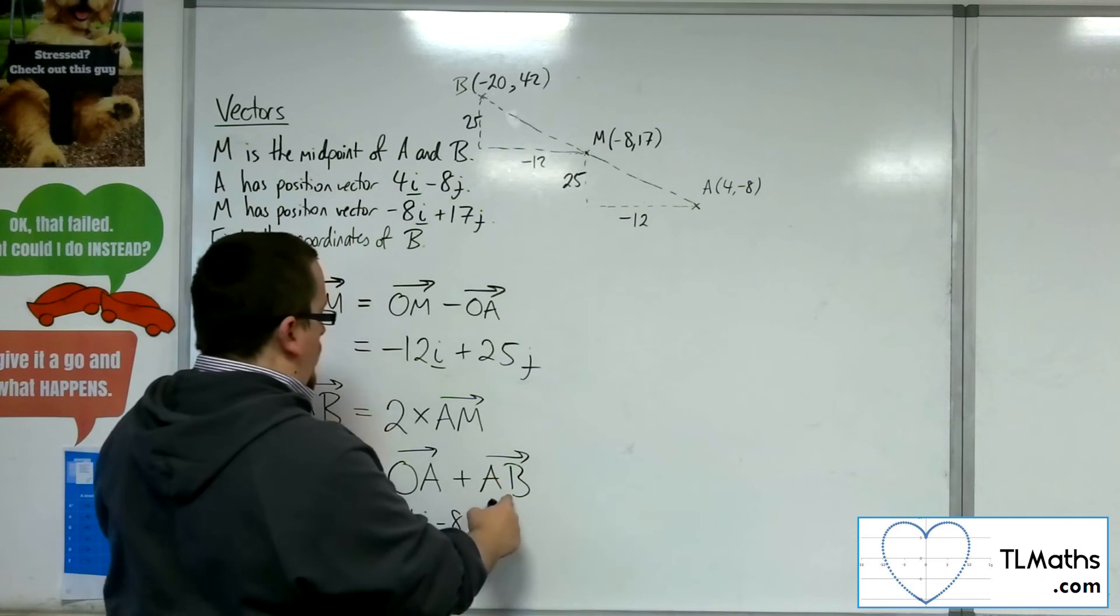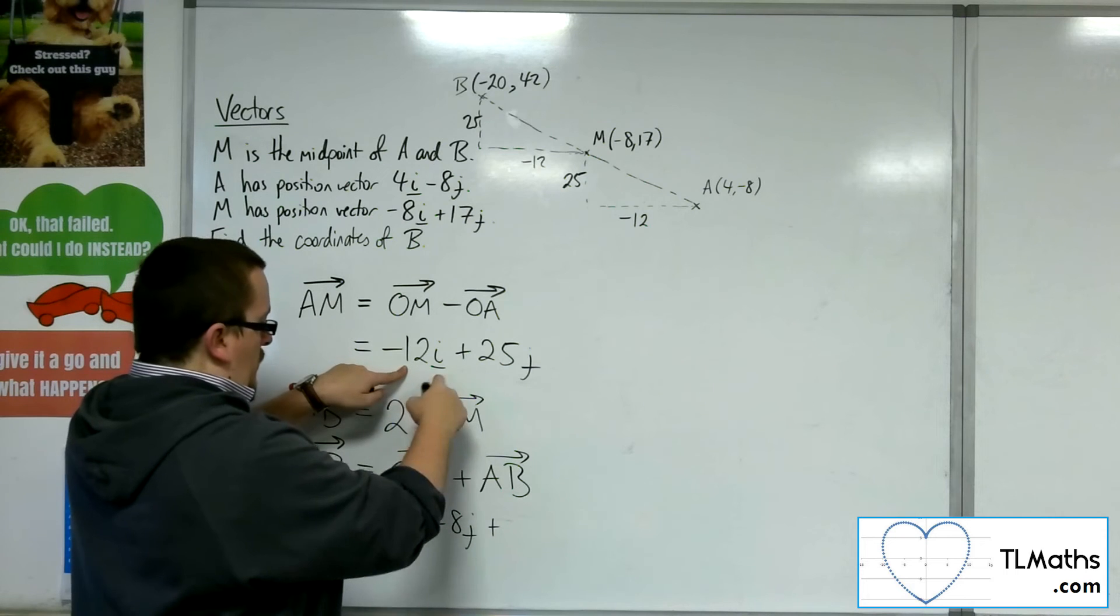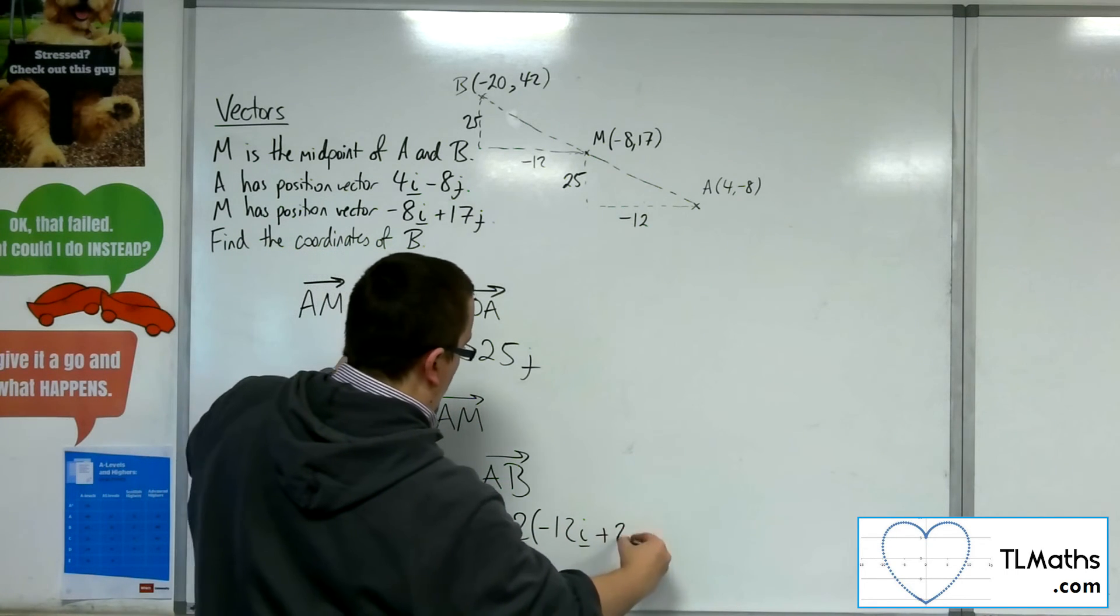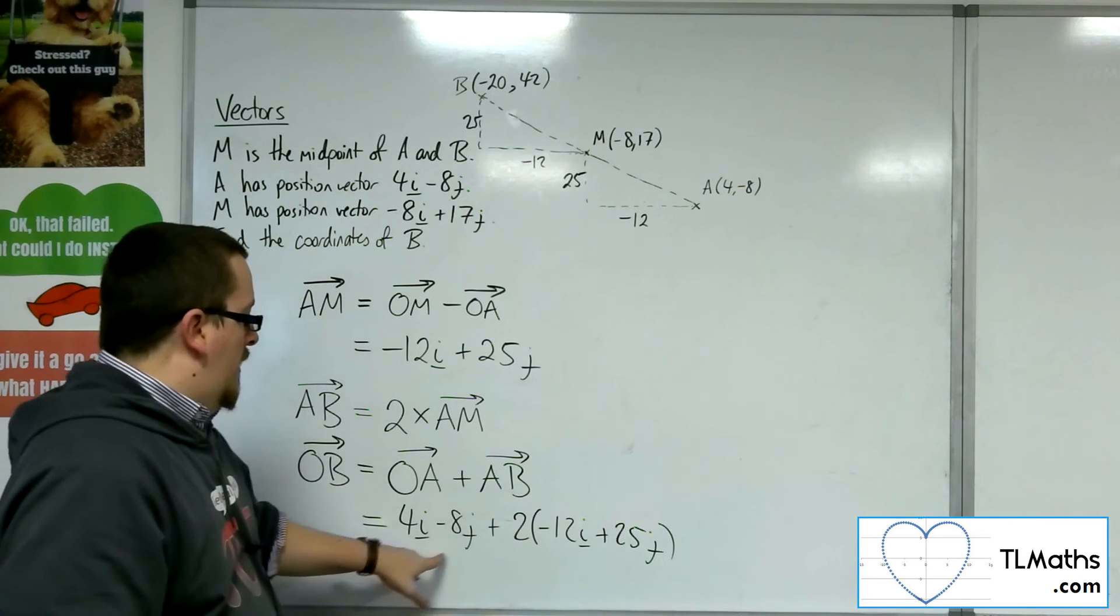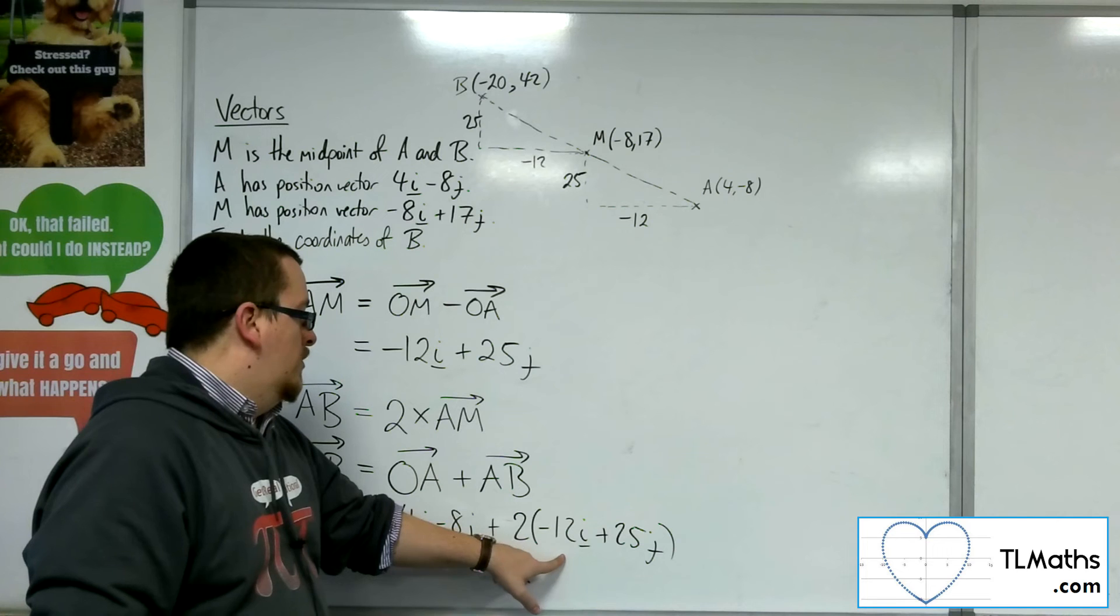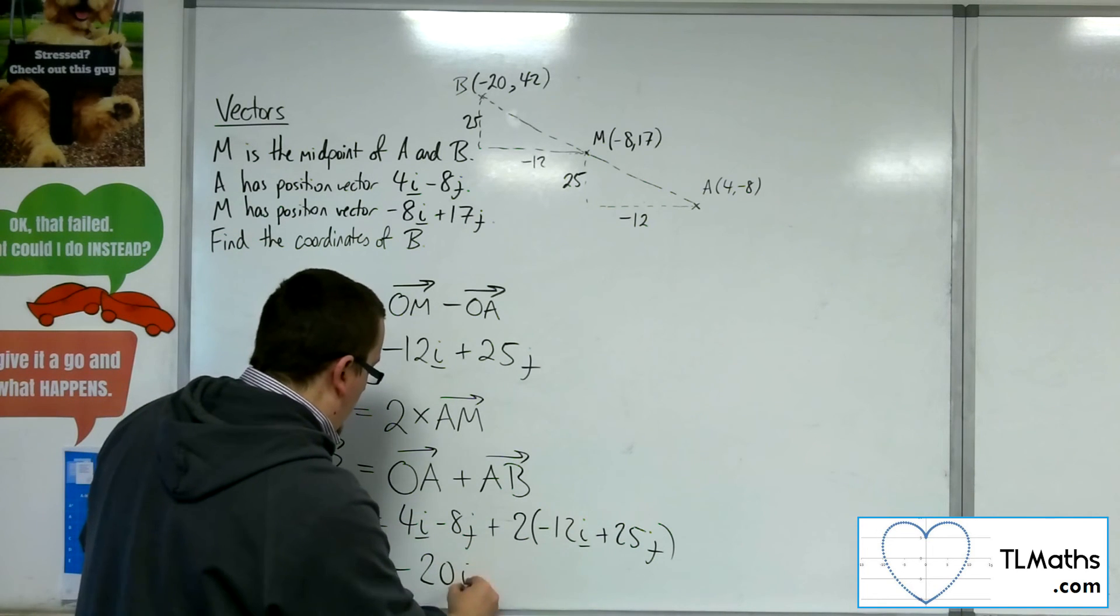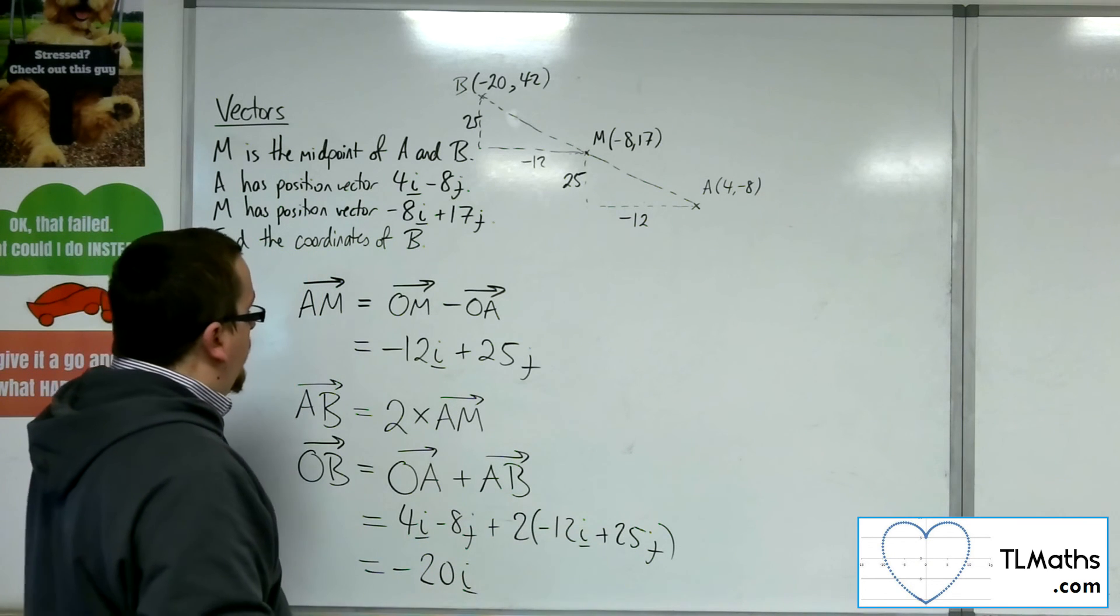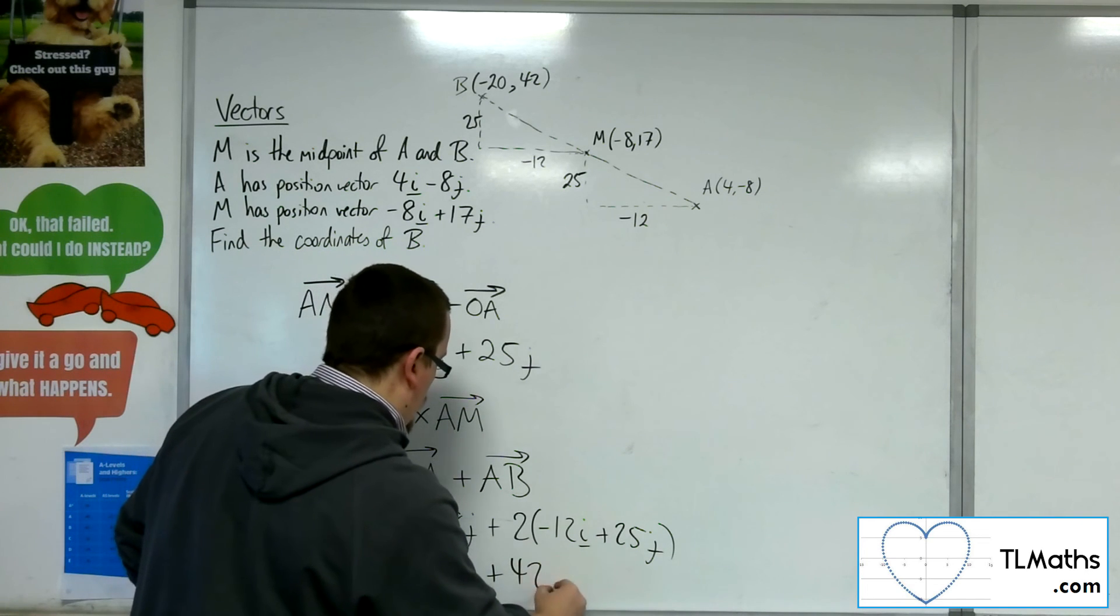And then I'm adding on AB, which is 2 lots of AM. So 2 lots of the minus 12i plus 25j. So 4i take away 24i is minus 20i, and then minus 8j plus 50 is plus 42j.